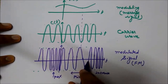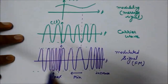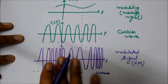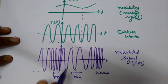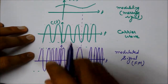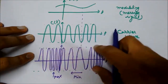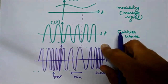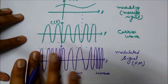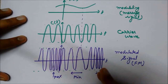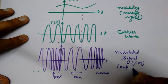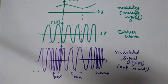So the information is in the form of frequency — as per the message signal, it is varying the frequency, and the spacing between the carrier wave cycles is changing. You can also notice here that the amplitude is not varying. The information is not in the form of amplitude, as was the case in amplitude modulation. The information is contained only in the variations of the frequency of the carrier wave, so the amplitude here is constant.